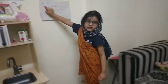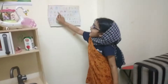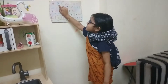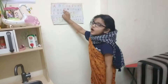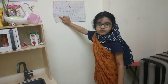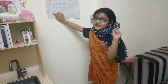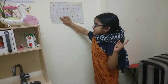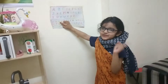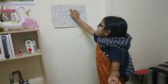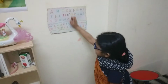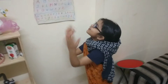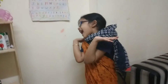This is capital letter A and small letter A. This is capital letter B and small letter B. This is capital letter C and small letter C. This is capital letter D and small letter D.